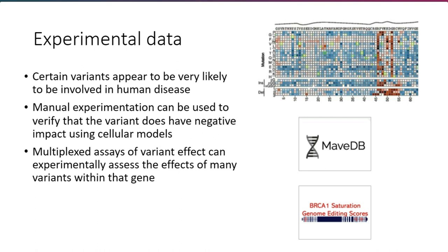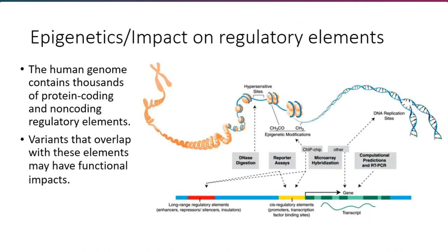Another type of data quite relevant to non-coding variants, which don't have direct implications for changes in proteins, is whether a variant occurs in an important regulatory element such as an enhancer, a repressor site, or a hypersensitive site. Annotators that tell you where these important regulatory elements are in the human genome may be useful in showing you whether a non-coding variant has functional importance.